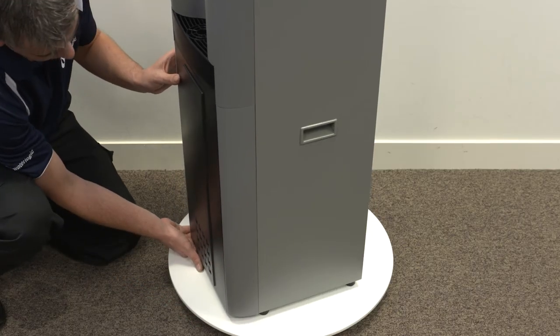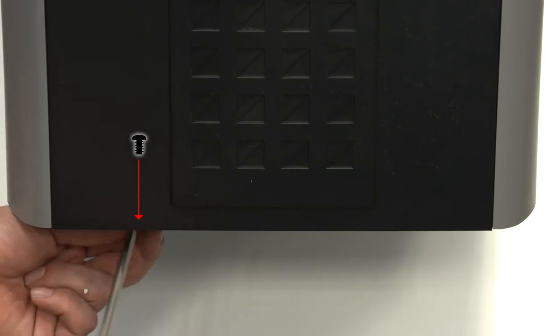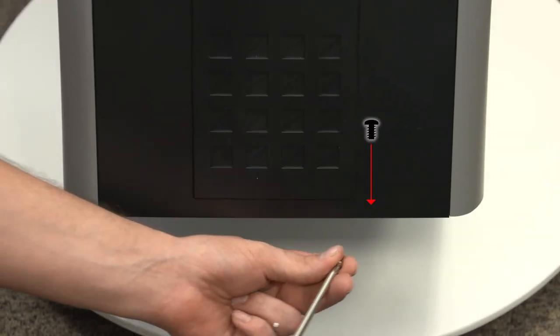Replace the front base panel by positioning the top first and by clipping the bottom in. Refit the screws into the base of the machine.